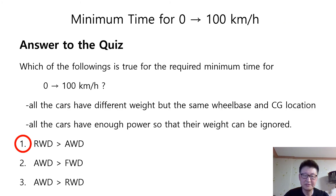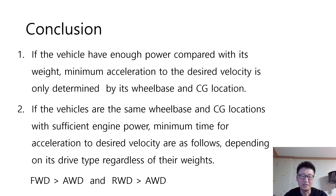I am expecting everyone got the answer. The answer is number 1. Here we have the conclusion: if a vehicle has enough power compared with its weight, the minimum acceleration to the desired velocity is only determined by its wheelbase and CG location. If vehicles have the same wheelbase and CG location with sufficient engine power, the minimum time for acceleration depends on drive type, regardless of weight. The minimum time of all-wheel drive is always the shortest.